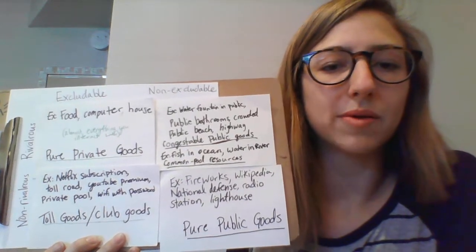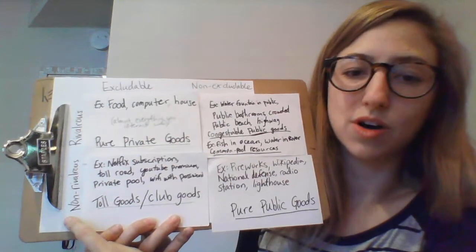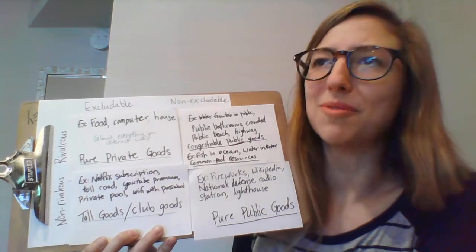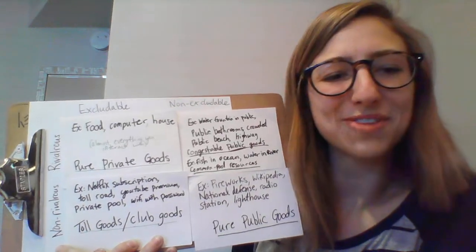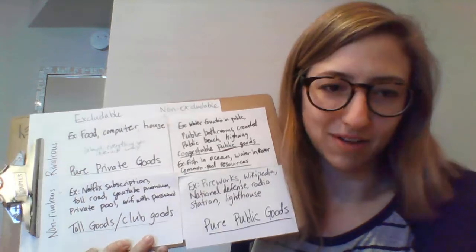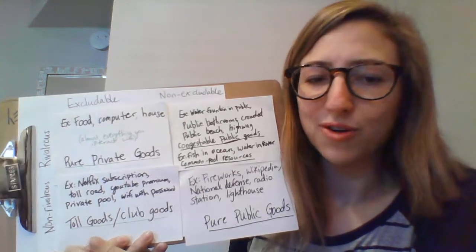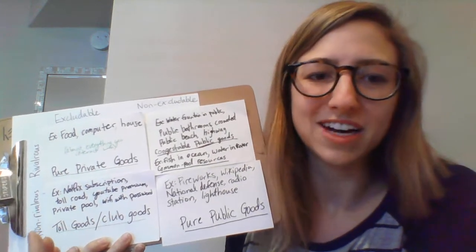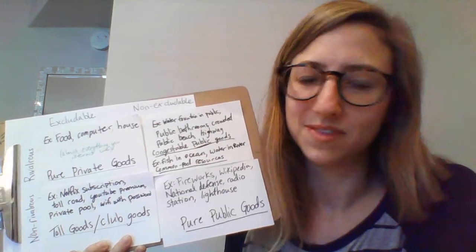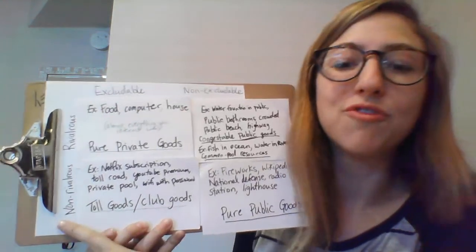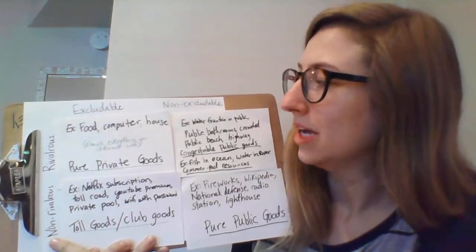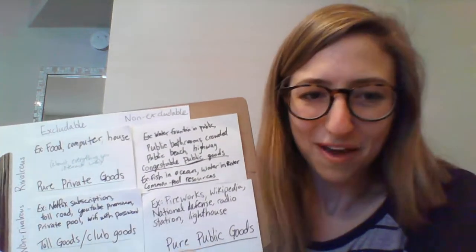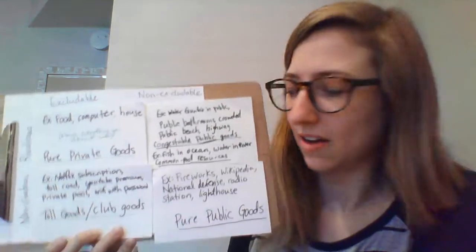Fireworks: people can watch a firework show without affecting other people's ability to watch it. Fireworks are profoundly non-rivalrous — if you're having trouble seeing the fireworks, just walk to a different area. People for miles around can enjoy them. And it's non-excludable: you can't blindfold everybody who didn't pay. People miles around can enjoy it.